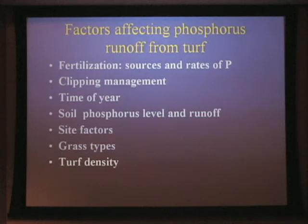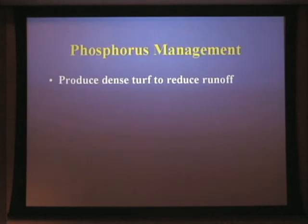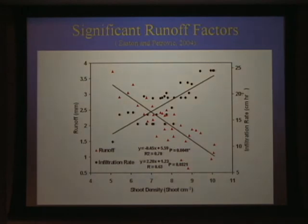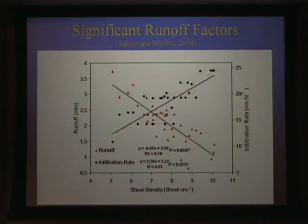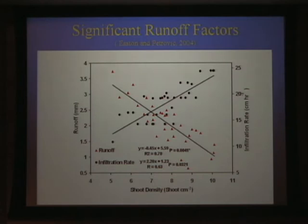As we have seen not just in this study but in several others, the runoff reduction we see related to turf is quite often related to density. We had a study done during an establishment phase with a Kentucky bluegrass-perennial ryegrass lawn area where we measured shoot density. As we doubled the shoots from 5 to 10 shoots per centimeter, we could see we could double the infiltration rate — going from about 12 millimeters an hour up to almost an inch per hour. At the same time, the volume of runoff dramatically dropped in a linear fashion.